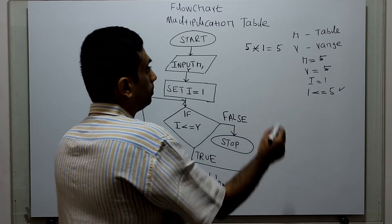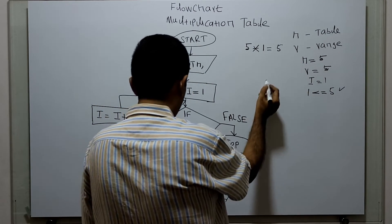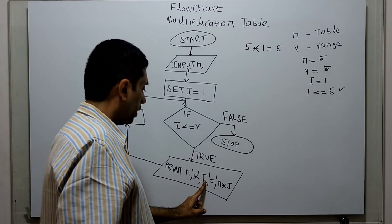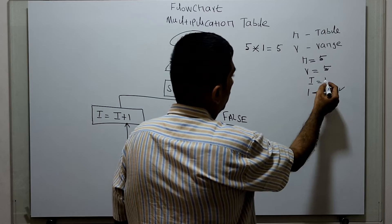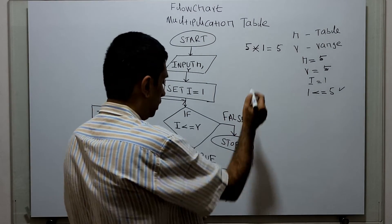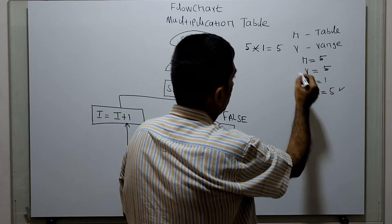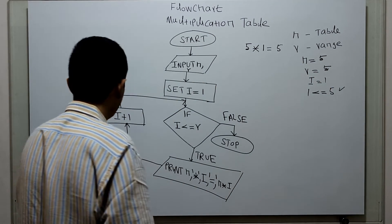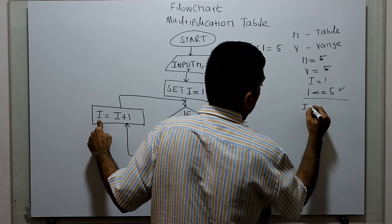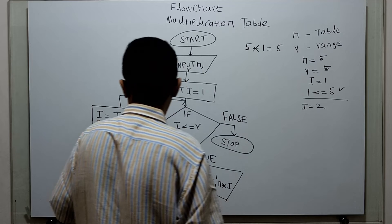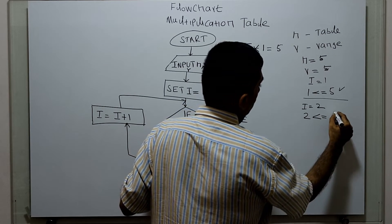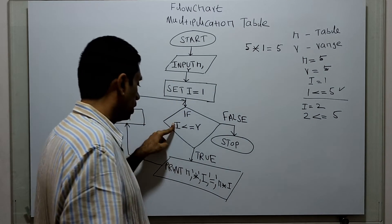I am printing: n value is 5, star is a string printed here, then the value of variable i which is 1, equal to symbol printed here, then n times i which is 5 times 1 equal to 5. Now I am incrementing i by 1, so now i equal to 2. Checking i less than or equal to r: 2 less than or equal to 5 is true.